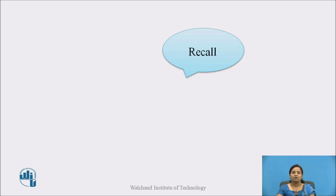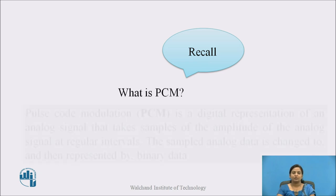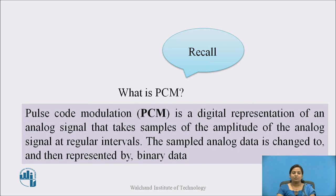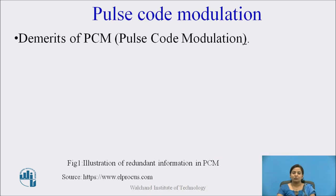Before starting the DPCM System, recall what is PCM. PCM, that is Pulse Code Modulation, is a digital representation of analog signal. It takes samples of the amplitude of analog signals at regular intervals. This sampled analog signal is converted into binary data. Now let us see the demerits of this PCM System.